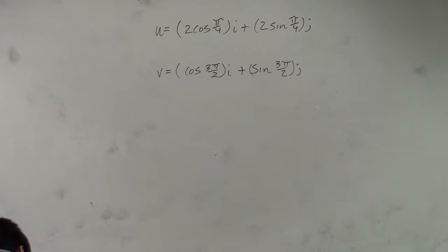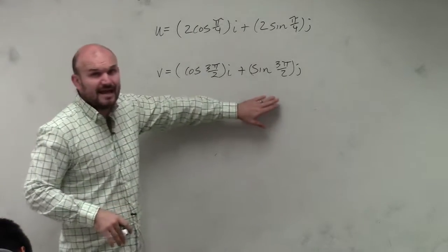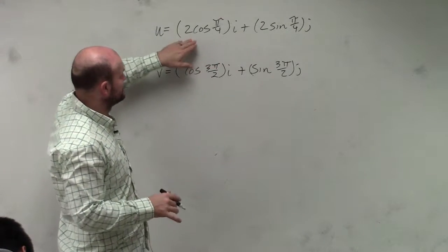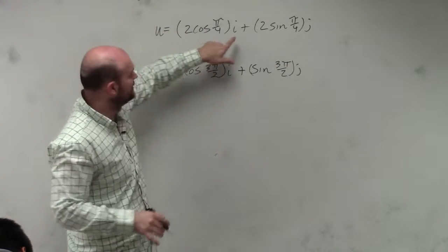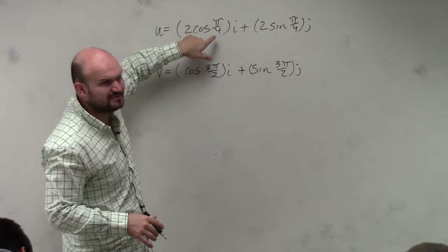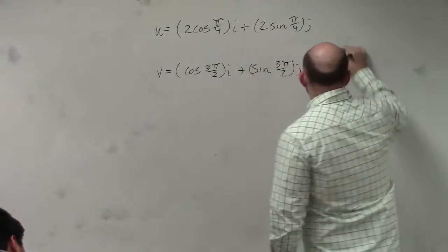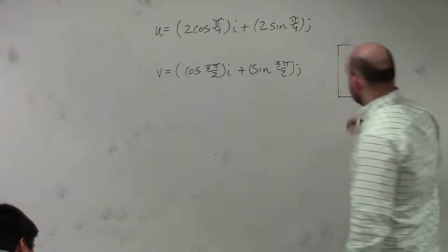Just kind of step back for a second and try to see. We're trying to find the angle between the two vectors, right? Now, if we're trying to find the angle between these two vectors, if I look at this and I say, well, do I know what the cosine of pi over 4 is? Yeah, let's go and sketch the little unit circle action.